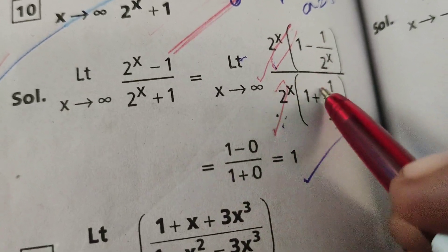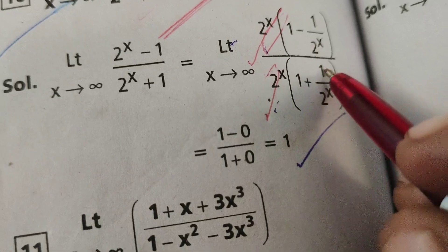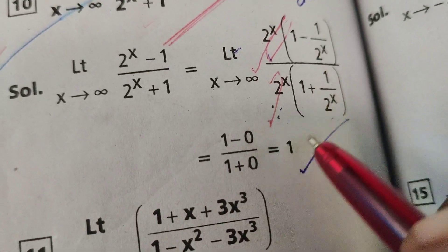Next, the remaining denominator also, 1 plus 1 by 2 power infinity, this is 0, 1 plus 0.